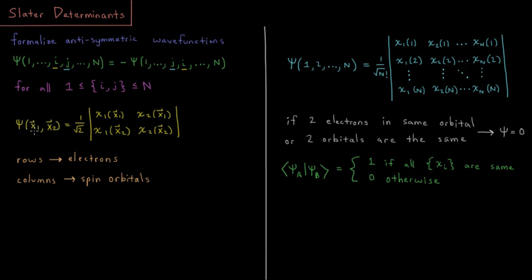x1 is the xyz and spin coordinate of electron 1, xyz spin of electron 2. The normalization constant is 1 over the square root of 2, and then we have the determinant of a matrix where all of the rows are individual electronic coordinates and all of the columns are individual spin orbitals.